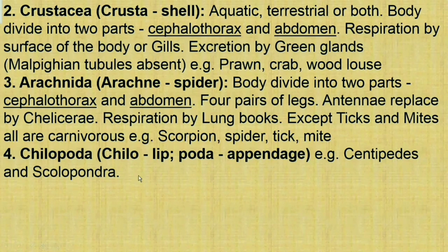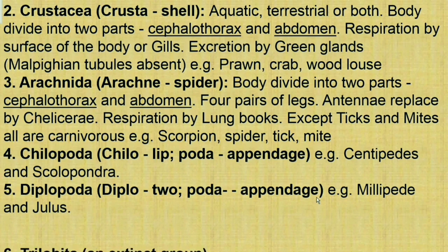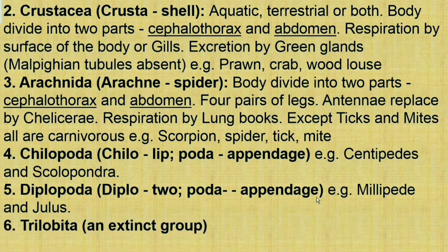The next class is Diplopoda. 'Diplo' means two and 'poda' means appendages. Animals of Diplopoda have two legs in each segment. Examples include millipede and Julius. Trilobita is an extinct group.